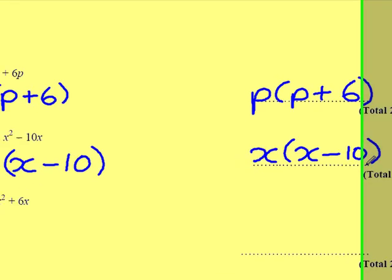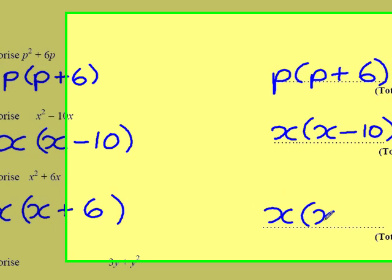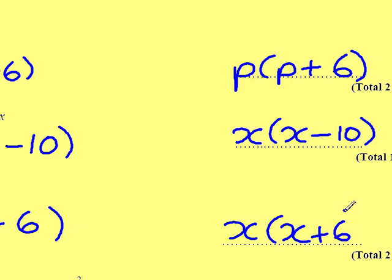Question 3. Factorise x squared plus 6x. Once again, there's an x in both that I can pull out. The only way I'm going to get x squared is if I multiply x by x. And the only way I'm going to get plus 6x is if I multiply x by the number 6. So that's x times x plus 6.